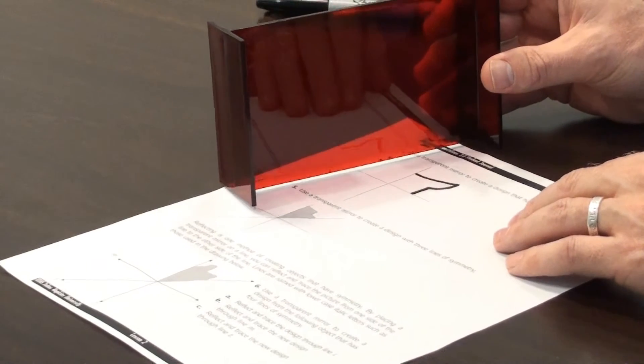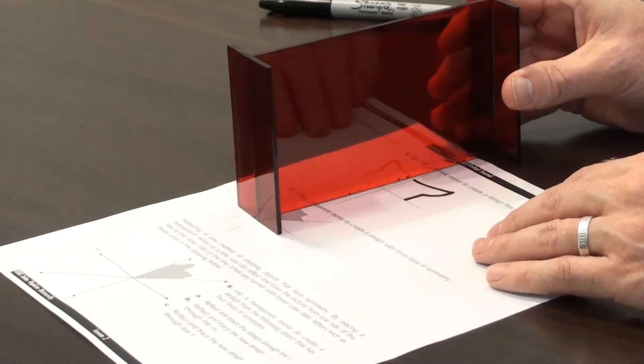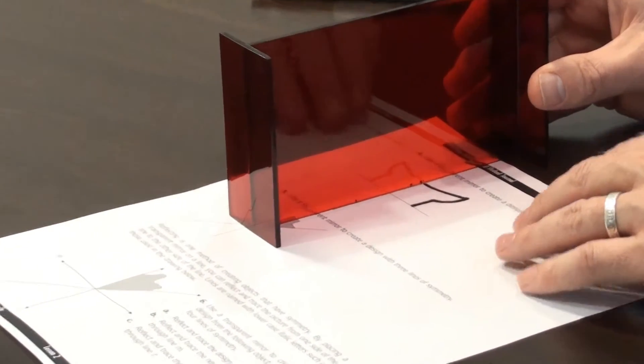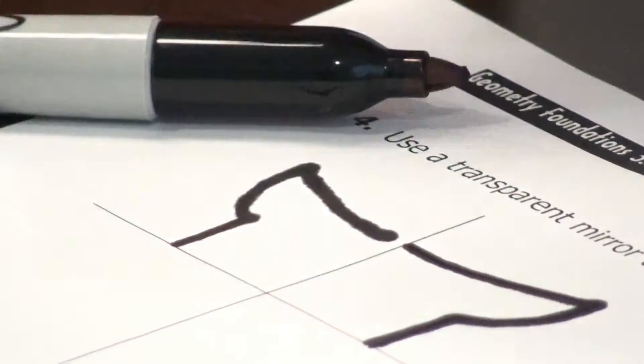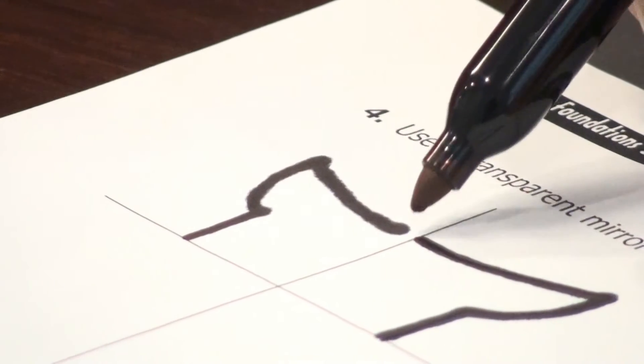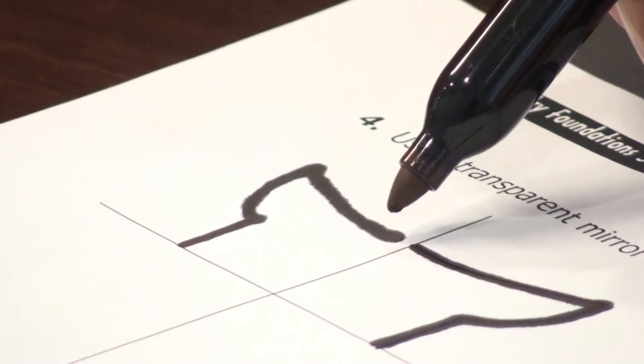As before, I need to get the object on my side of the transparent mirror and line of symmetry. Then I can reflect the image through one of the lines of symmetry. Now I make my first trace of the image. You will notice that because of the mirror's thickness, there will be a small gap between the object and the image. You can fill in this small gap freehand.